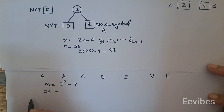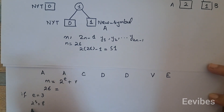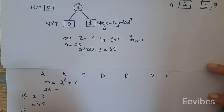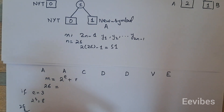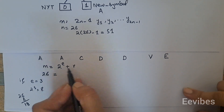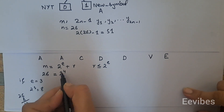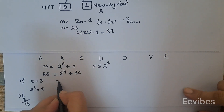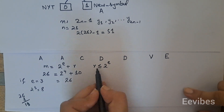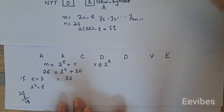If e equals 3, then 2^3 equals 8, and r would be 26 minus 8 which is 18. But 18 is greater than 2^e, so this doesn't satisfy the condition. If instead we choose e equals 4, then 2^4 equals 16, and r equals 10, since 16 plus 10 equals 26. Here 10 is less than 16, which satisfies the required condition.